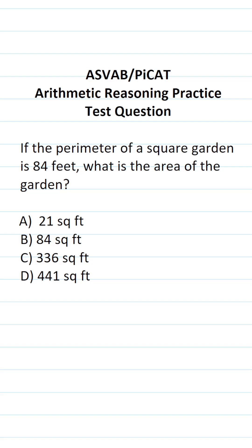This arithmetic reasoning practice test question for the ASVAB and PiCAT says, if the perimeter of a square garden is 84 feet, what is the area of the garden?